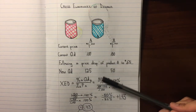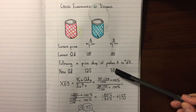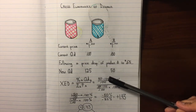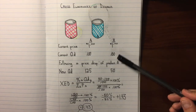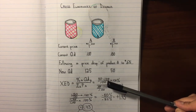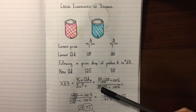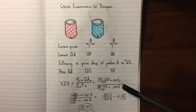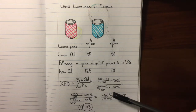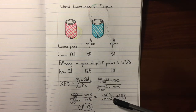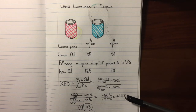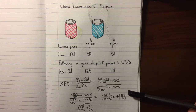The new quantity demanded for A has changed to 125, whereas the new quantity demanded for product B has dropped to 50. So we take the new quantity demanded of 50 for product B, subtract the original 100, divide by 100, and multiply by 100%. We do the same with the price of product A: new price minus old price, divided by old price, times 100%. That gives us minus 50% divided by minus 35%, which equals positive 1.43.